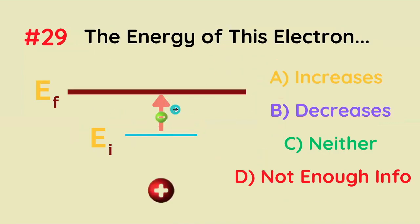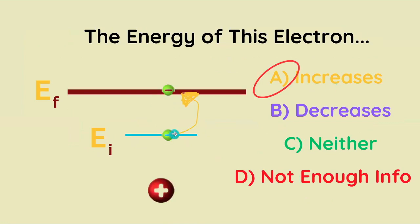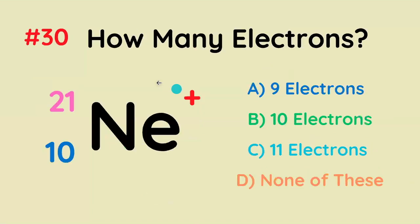The energy of this electron does what? Does it increase, decrease, or is there not enough information? It increases, because it gets further away from the nucleus, occupying a higher energy shell.